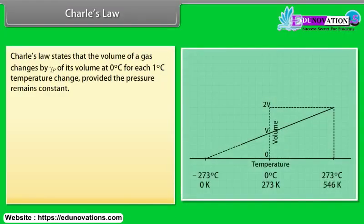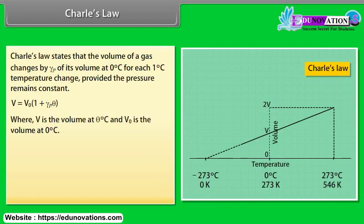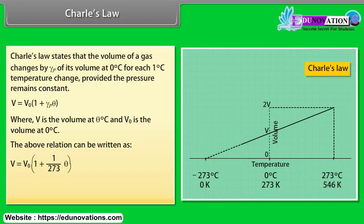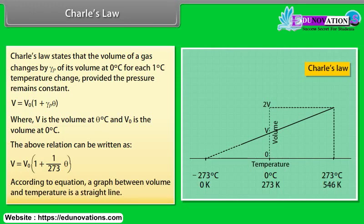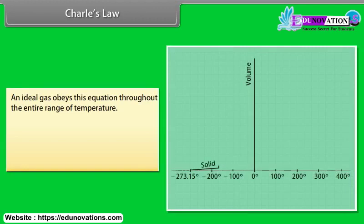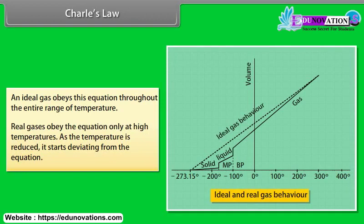Charles' law states that the volume of a gas changes by gamma P of its volume at 0 degree centigrade for each 1 degree centigrade temperature change provided the pressure remains constant. V is equal to V not multiply by 1 plus gamma P theta, where V is the volume at theta degree Celsius and V not is the volume at 0 degree centigrade. The above relation can be written as V is equal to V not multiply by 1 plus theta upon 273. According to equation, a graph between volume and temperature is a straight line. An ideal gas obeys this equation throughout the entire range of temperature. Real gases obey the equation only at high temperatures. As the temperature is reduced, it starts deviating from the equation.